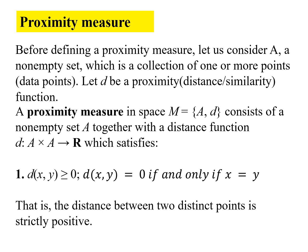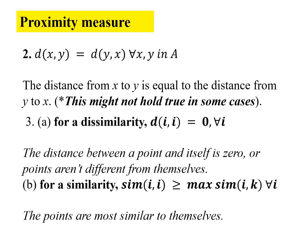Before we define a proximity measure, we are talking about a set A, which was also represented as a data matrix, which is a collection of one or more points, the data points. If D is such a function, the proximity function, there are general criteria of being a distance function. D(x,y) greater than or equal to 0, which means the distance between two points will always be non-negative, and it will be 0 if and only if the two points are identical in their attribute values. The distance between two distinct points is strictly positive. The distance between x to y and y to x should be same for all x, y.